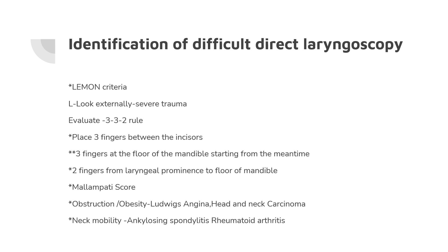E in LEMON stands for 'evaluate' using the 3-3-2 rule as discussed. M stands for Mallampati score. O stands for obstruction and obesity, which can be caused by conditions like Ludwig's angina and head and neck carcinomas. N stands for neck mobility — in cases of ankylosing spondylitis and rheumatoid arthritis, neck movements are restricted. So the LEMON criteria are: L for look externally, E for evaluate by the 3-3-2 rule, M for Mallampati score, O for obstruction/obesity, and N for neck mobility.